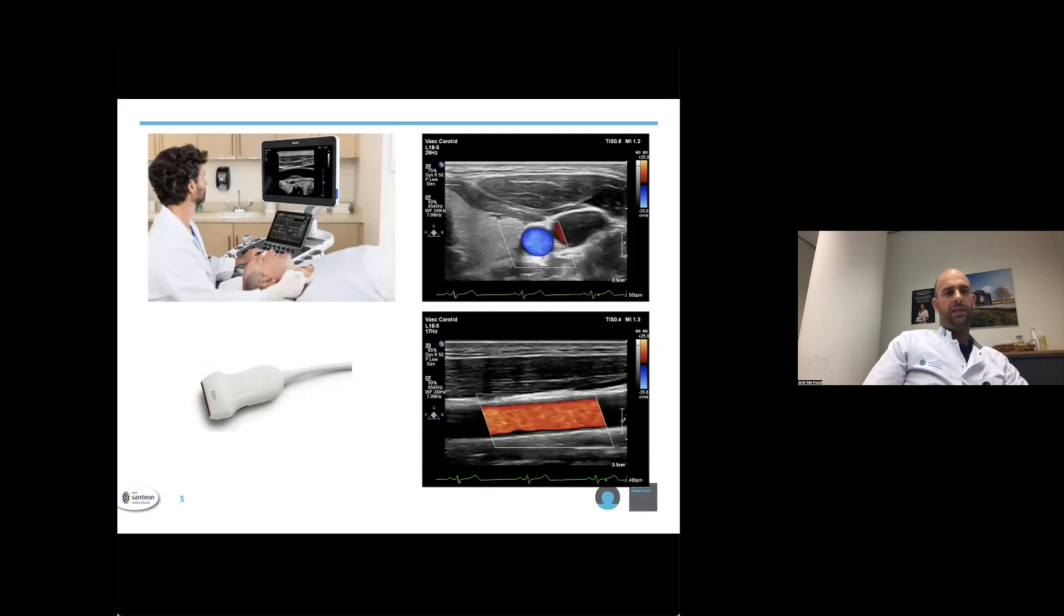During a carotid doppler examination, the patient is lying supine with the head slightly rotated. The common carotid artery can be easily visualized with a linear array transducer with a high frequency rate, as shown in the left lower image. In the right upper corner, a short axis colored doppler image of the common carotid artery is seen, with the internal jugular vein just lateral. In the right lower corner, you can see the long axis view of the carotid artery as a nearly straight tube. This is, however, not always the case.